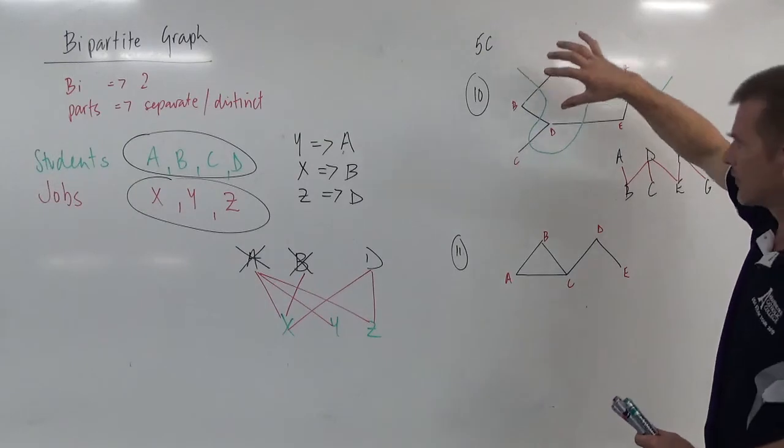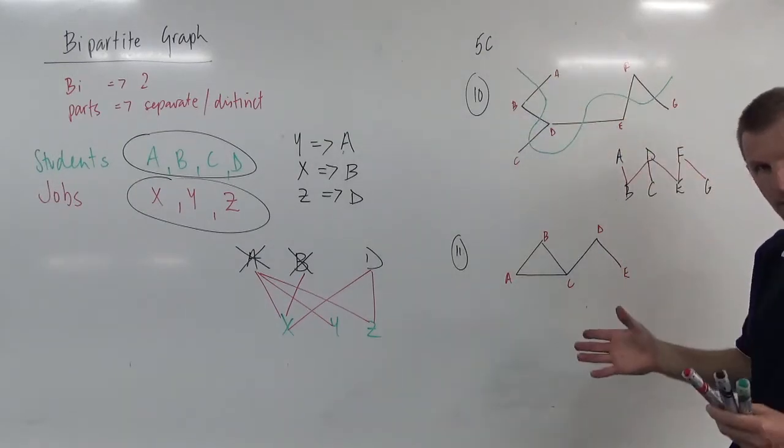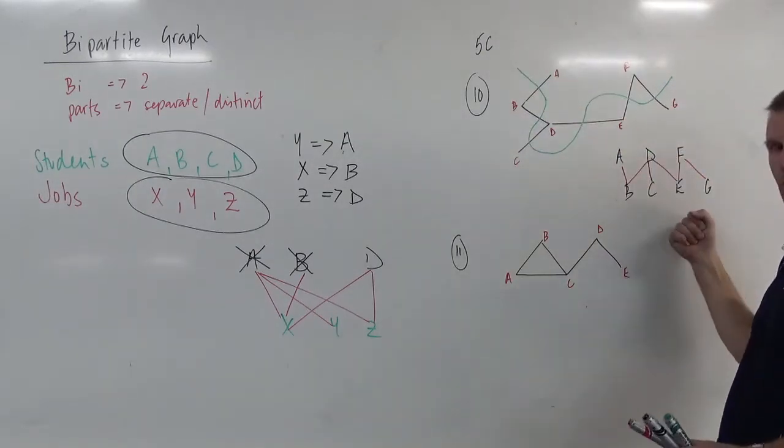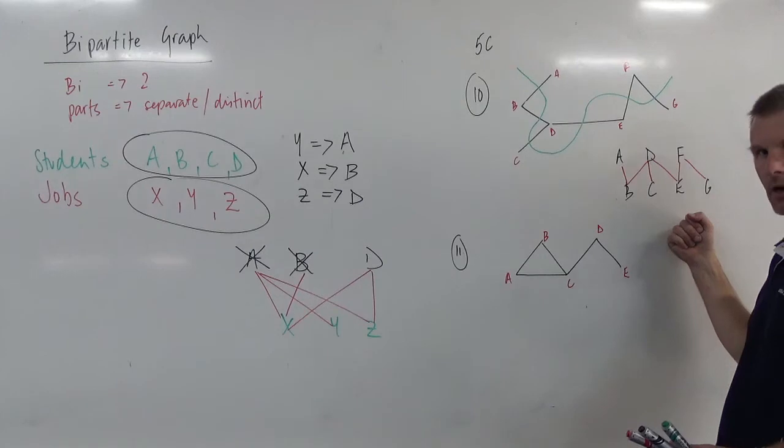So a tree diagram can turn into a bipartite graph if you can snake a line around and separate any two that are next to each other. If you can't separate two that are next to each other, you can't turn it into a bipartite graph.